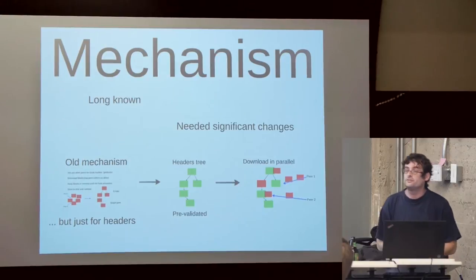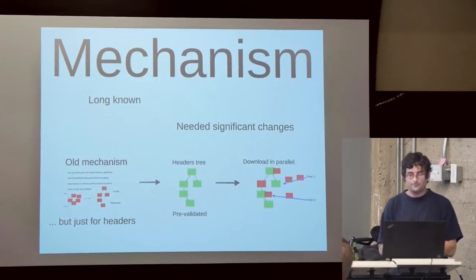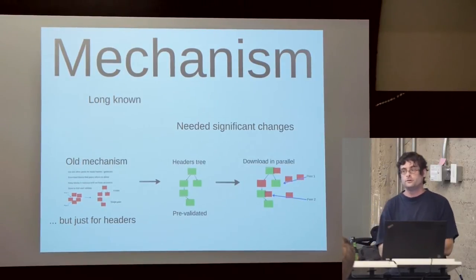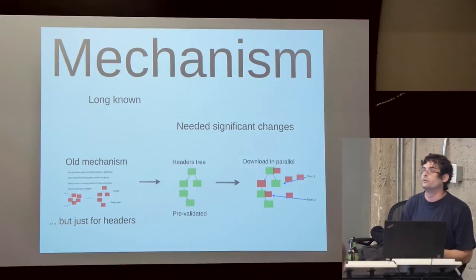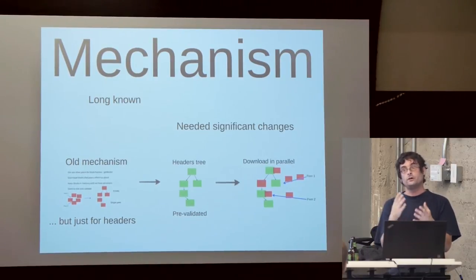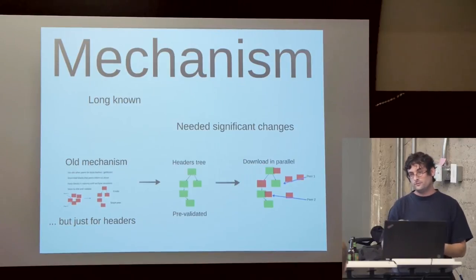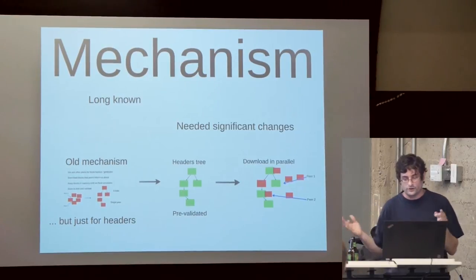BIP66 is a change where we do want to modify the consensus rules. A soft fork is a backward-compatible change to the consensus rules — it imposes an extra rule so that something previously valid becomes invalid. It only requires a majority of miners to adopt the new rule, since that guarantees things violating the rule won't be accepted in the blockchain, and old nodes only accept more than new nodes, so they agree with it as well. BIP66 specifically says only strict DER signatures are allowed in transactions.